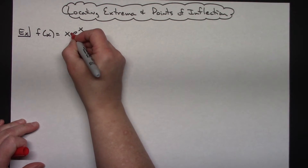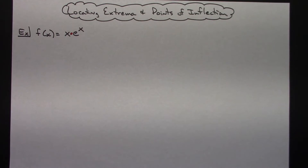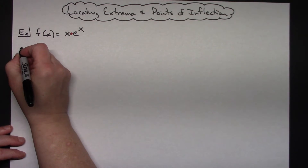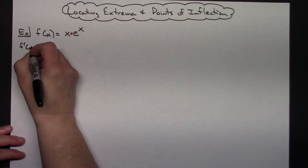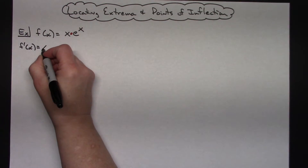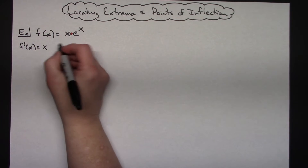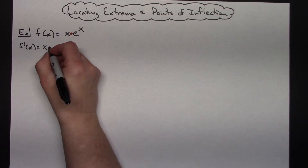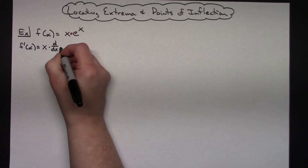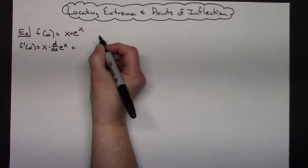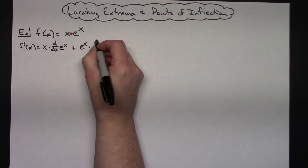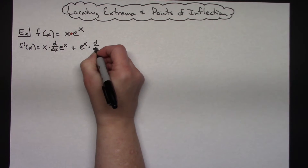Hopefully you see that there is a product right there, so it is going to involve the product rule when I do my derivative. So f prime of x is going to be equal to the first times the derivative of the second. I'm going to use ddx notation here in this first line — ddx of e to the x, plus the second, which is e to the x, times ddx of x.